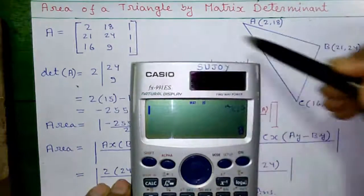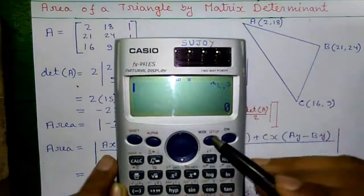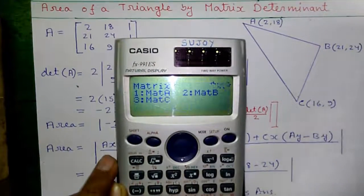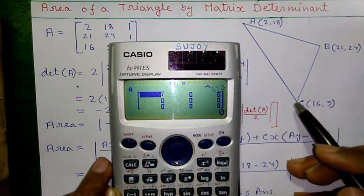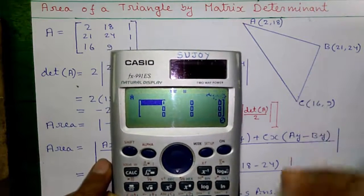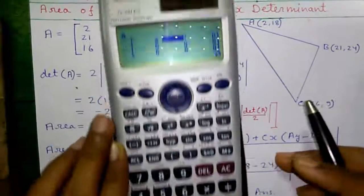Now, let us find out the area directly on this calculator. For that, press mode 6 for matrix, 1 for matrix A, 1 for 3 cross 3 matrix. Now, let us enter the elements. To enter an element, type in the element and press equals to button to enter.